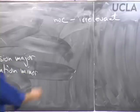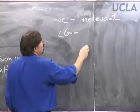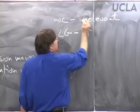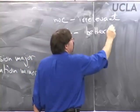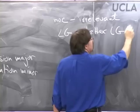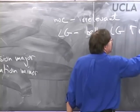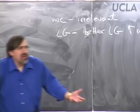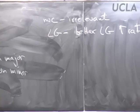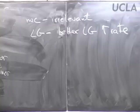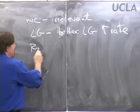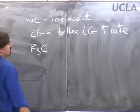We talked about the leaving group — that's certainly relevant. Making the leaving group better influences the rate, because the easier the leaving group is to depart, the faster the reaction goes in that rate-determining step. We talked about the nature of the things attached to the carbon.